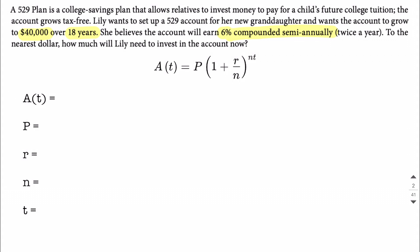So this is a compound interest formula problem, where we have A(t) equals P times the quantity 1 plus r over n raised to the n times t. So A(t), that's what it's worth in the future, or the accumulated amount.